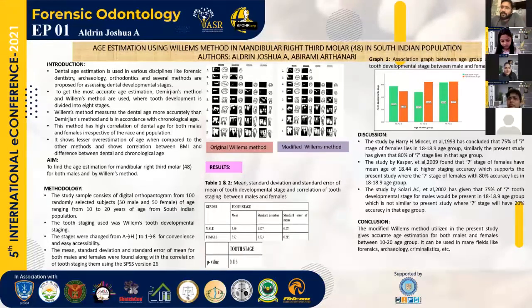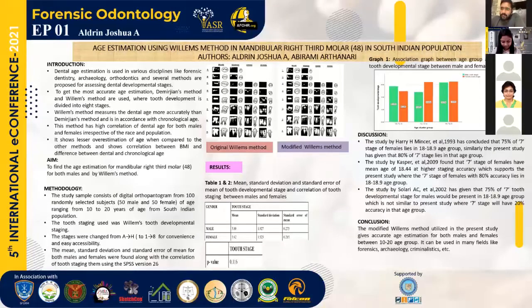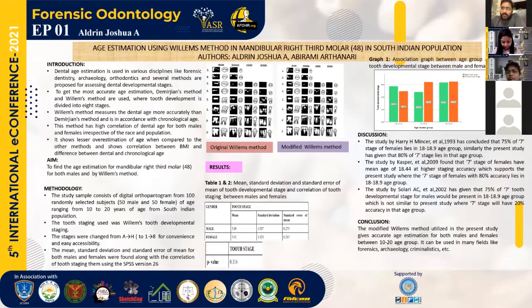Williams' method has high correlation of dental age for both males and females, irrespective of race and population. It showed lesser overestimation of age when compared to other methods like the NOLAS method, LISE, and London Atlas, even Demirjian's method. From previous articles, it also shows a correlation between BMI and the difference between dental and chronological age.